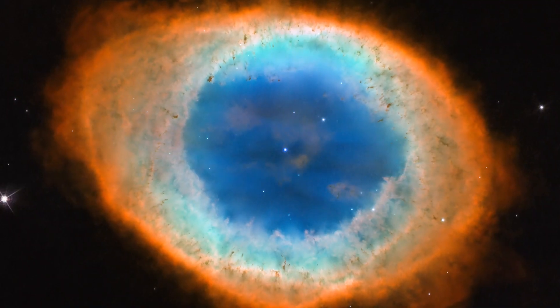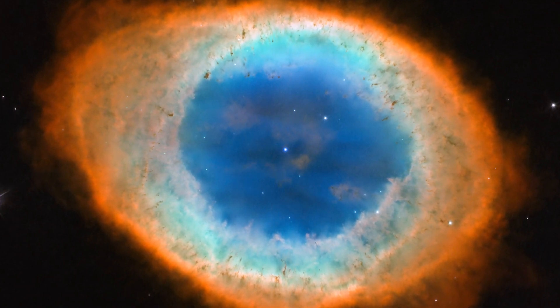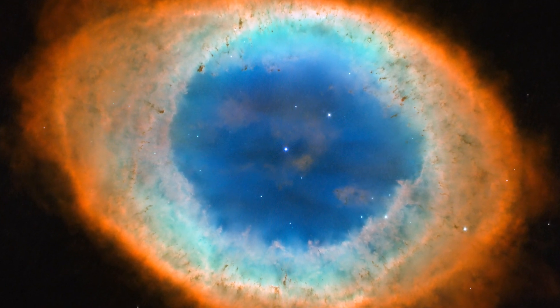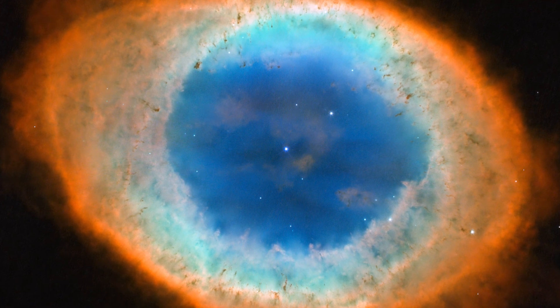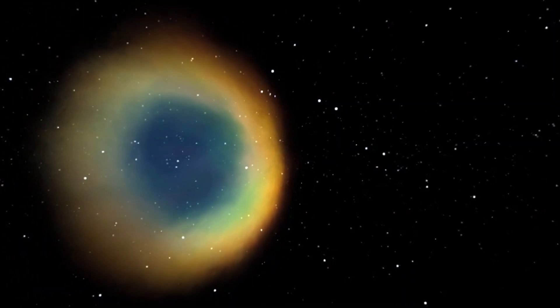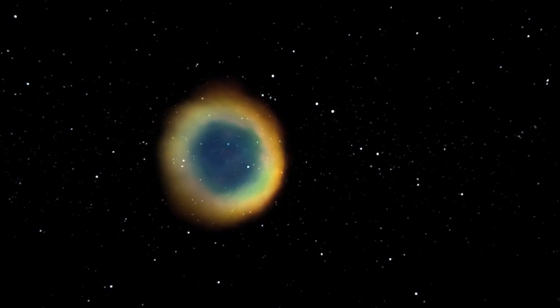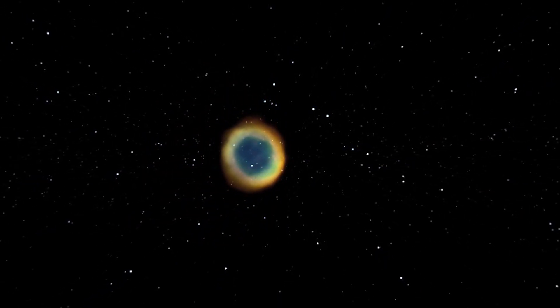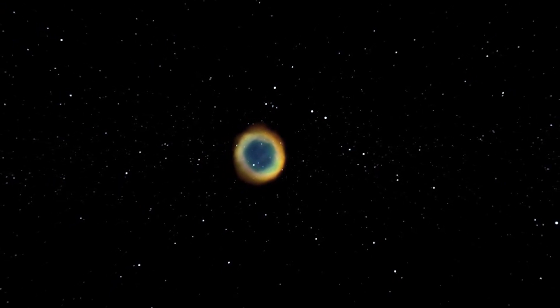The Hubble high-resolution image helped astronomers determine that the nebula's shape is more complicated than initially thought. The blue gas in the nebula's centre is actually a football-shaped structure, seen end-on, that pierces the red donut-shaped material.